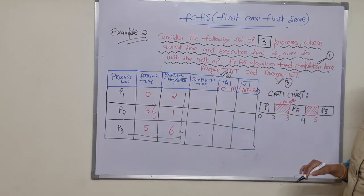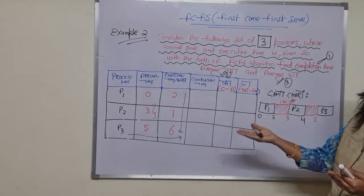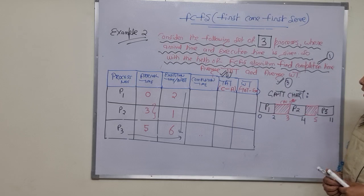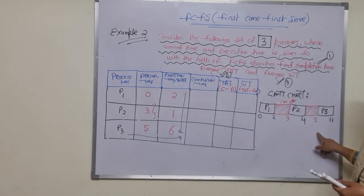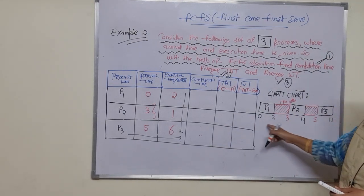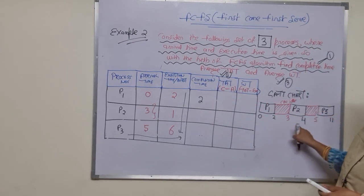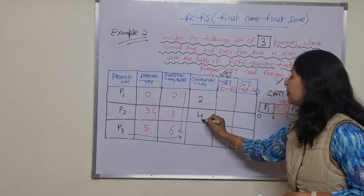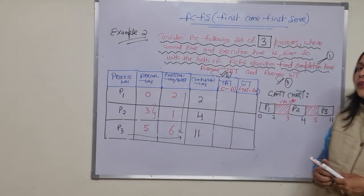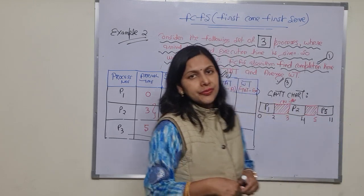At time 5, process P3 arrives and its execution time is 6, so it runs from 5 to 11. Now we can write the completion times: the completion time for P1 is 2, the completion time for P2 is 4, and the completion time for P3 is 11.